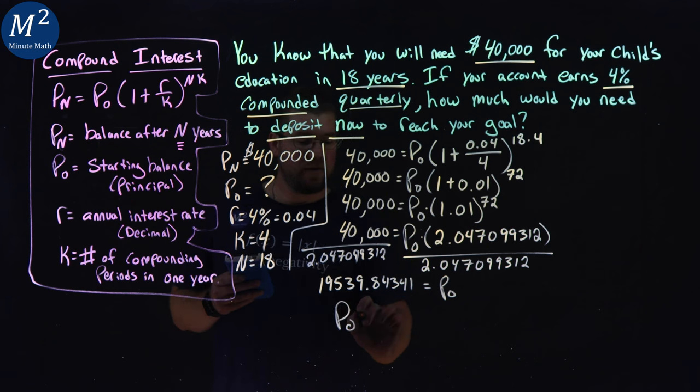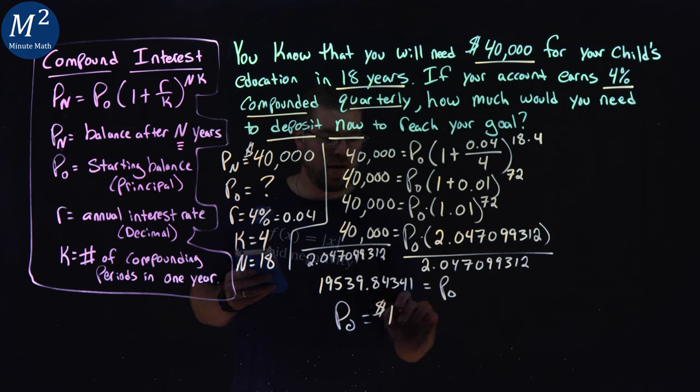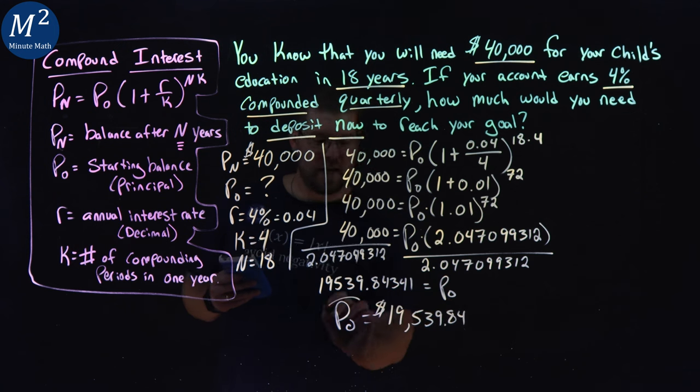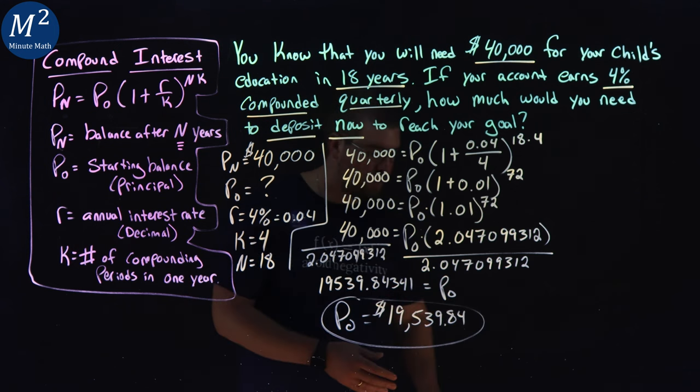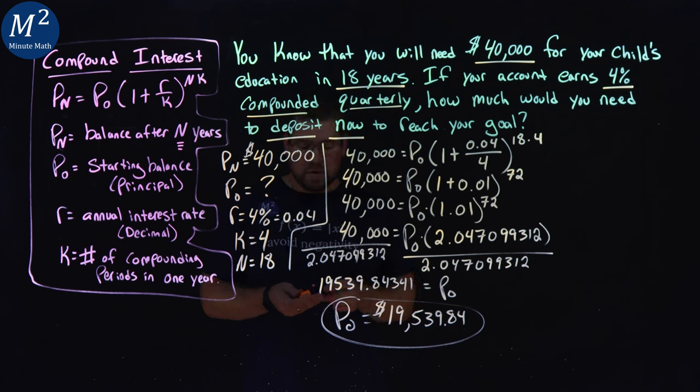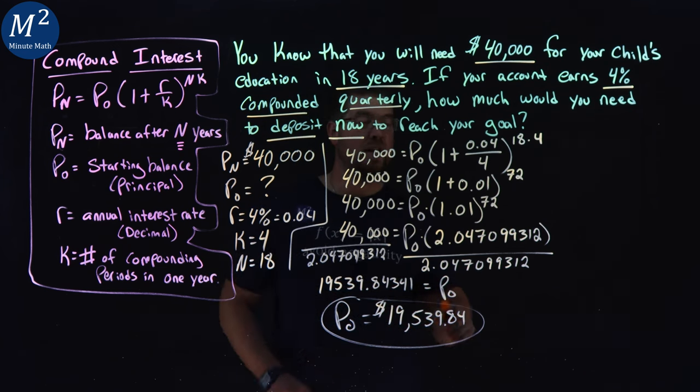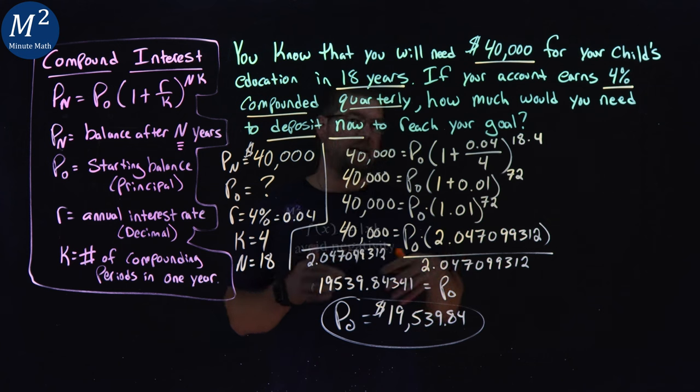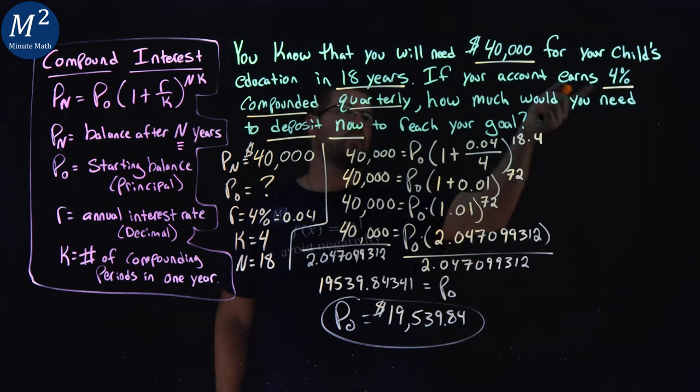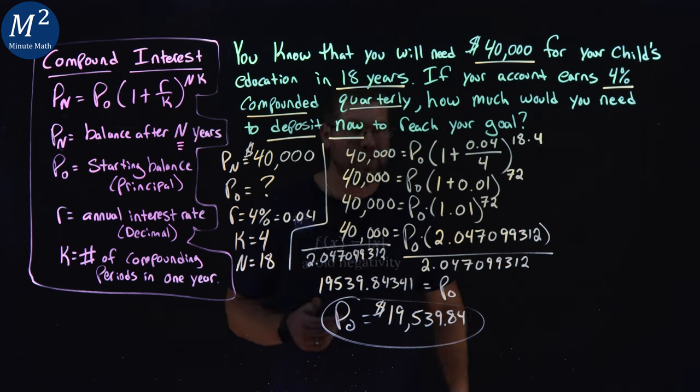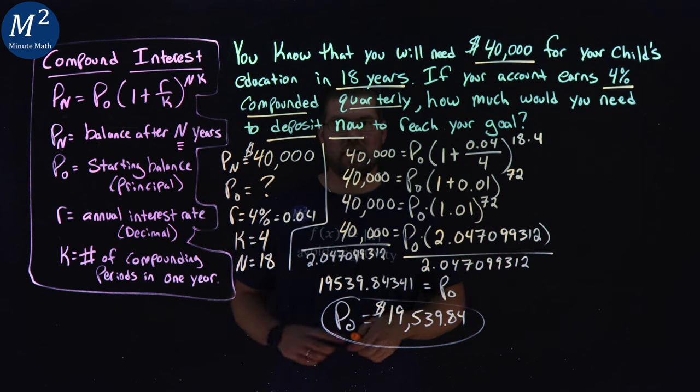If we want to round that amount to two decimal places, 2 cents, we have $19,539.84. And so if you deposit now $19,539.84 right now in an account that is compounded quarterly at 4%, in 18 years you would have your goal of $40,000. So again,